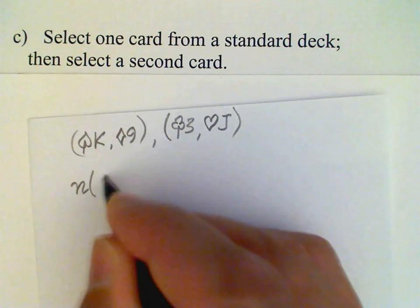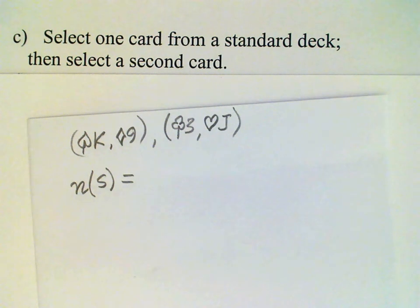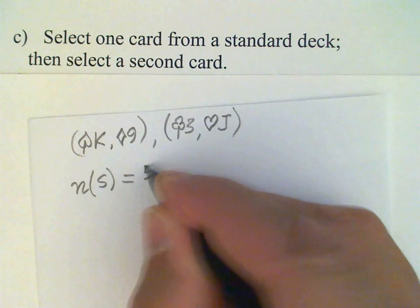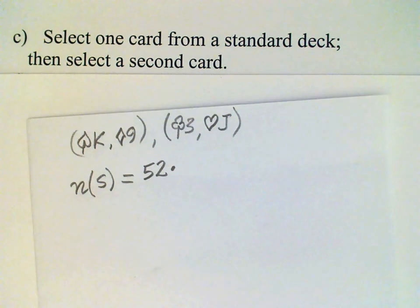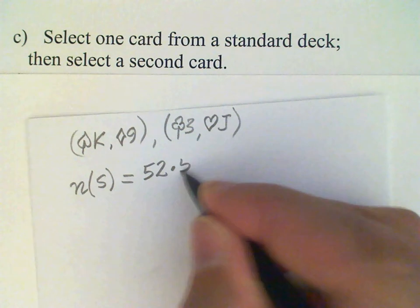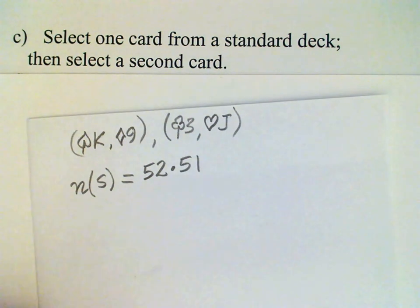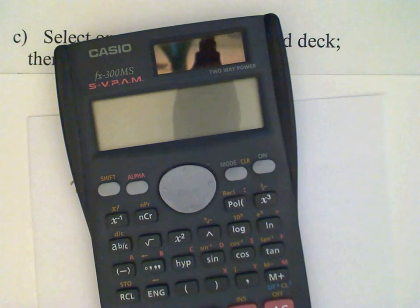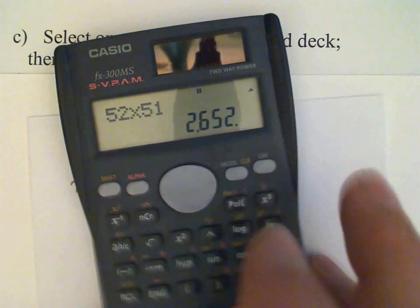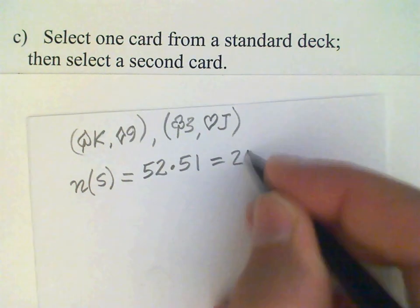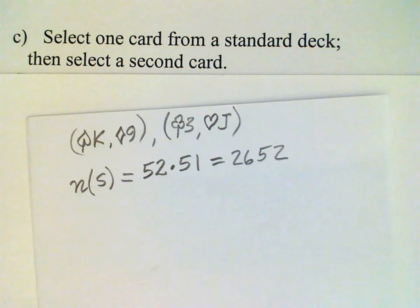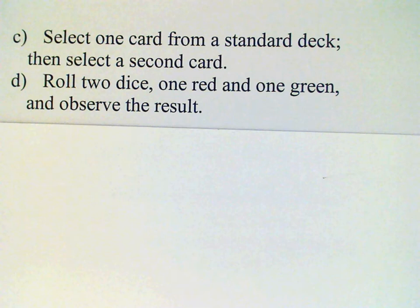Number in the sample space: we get this by looking at the number of ways to pick the first card, which is 52 of course, and then the number of ways to pick the second card is 51. So 52 times 51, and the answer is 2,652.